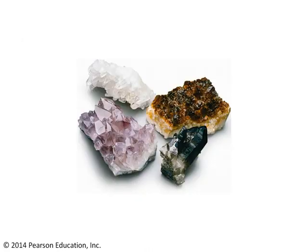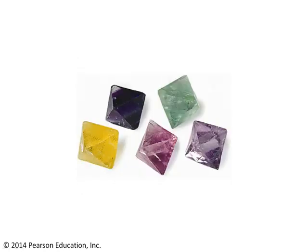But color is not all that reliable an indicator of which mineral you're looking at. For example, here are four different colored specimens, but they're all the same mineral: quartz. What makes these quartz samples and fluorite samples different colors? It's just little impurities — small amounts of other elements that get into that mineral and stain it a different color.